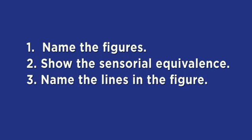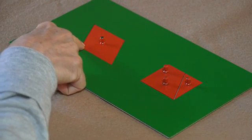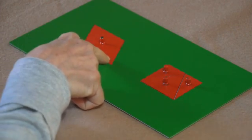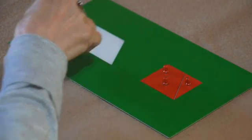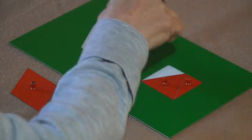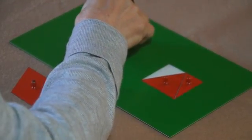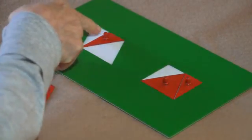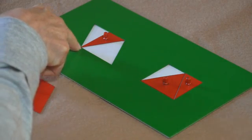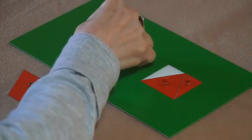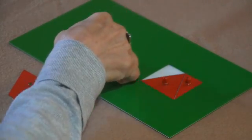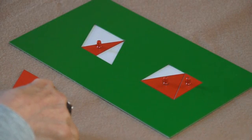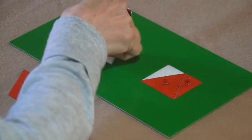Step three, we'll name the lines in the figures. This is a parallelogram. This is its base. And to show the height of the parallelogram, we need to see a perpendicular line from the base to the opposite side. So either of those lines shows us the height of the parallelogram.